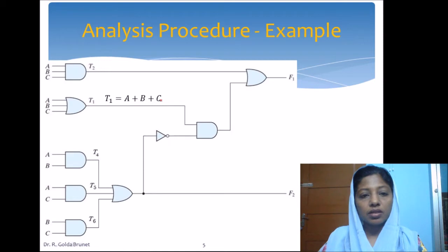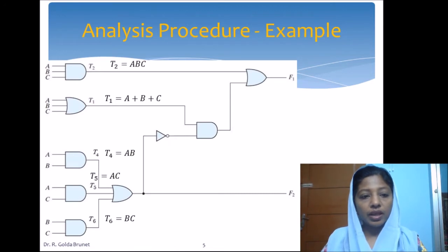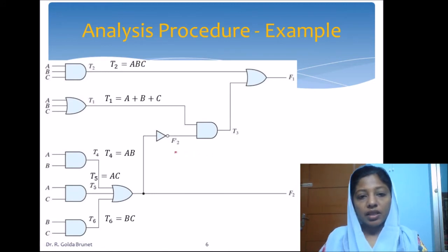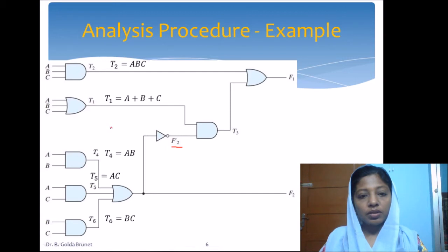So t1 = A + B + C. T2 = A·B·C. T4 = A·B. T5 = A·C. T6 = B·C. The next step is to label the gates which are functions of either the direct inputs or the outputs of previous gates.